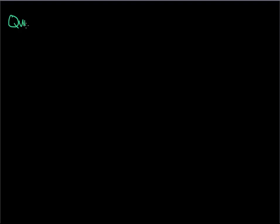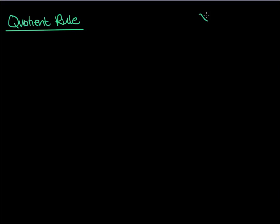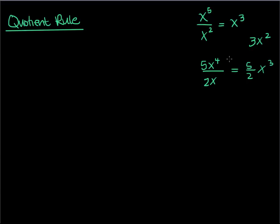Now let's talk about the quotient rule. So that was the product rule. The quotient rule deals with division. We cannot take the derivative of the top and divide by the derivative of the bottom. For example, x to the 5th over x squared is x cubed, and the derivative is 3x squared — but taking derivative of top over derivative of bottom gives 5 halves x cubed, which is clearly wrong. So there's something else we must do — this is what we call the quotient rule.